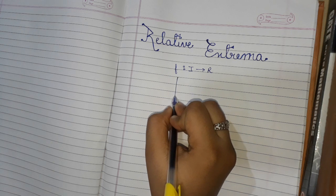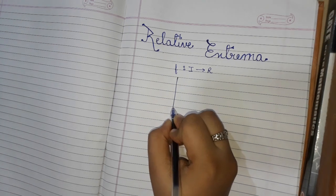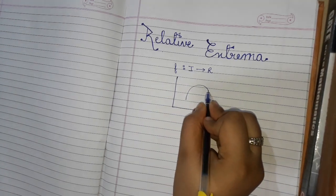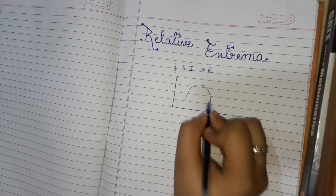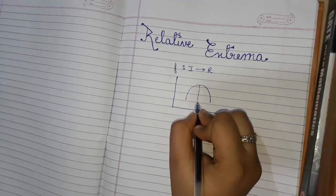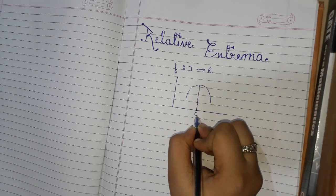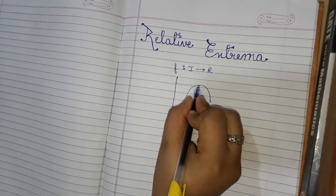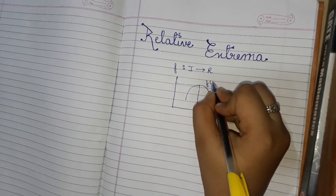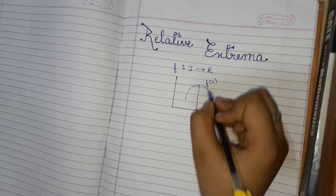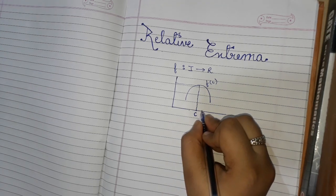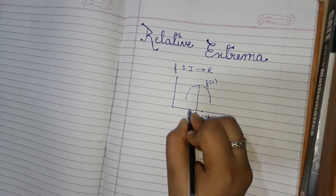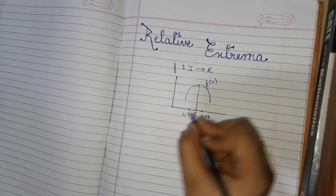To understand this, we consider some function where c is an interior point in that interval. Here the value will be f(c), and if we make a neighborhood of c, this will be c plus delta and c minus delta.